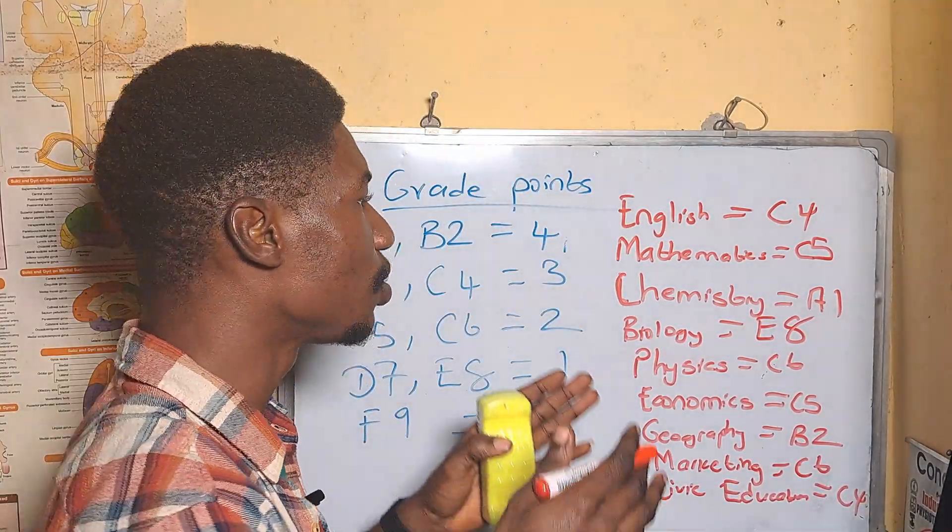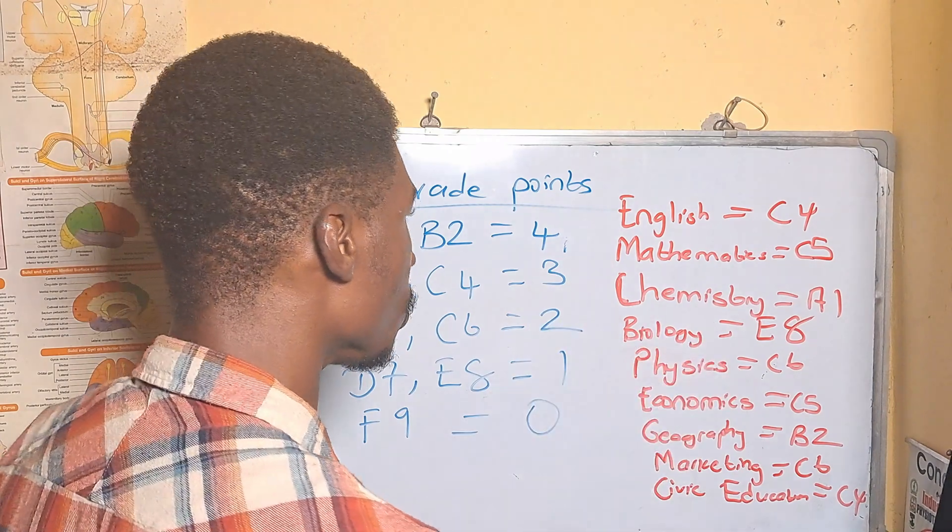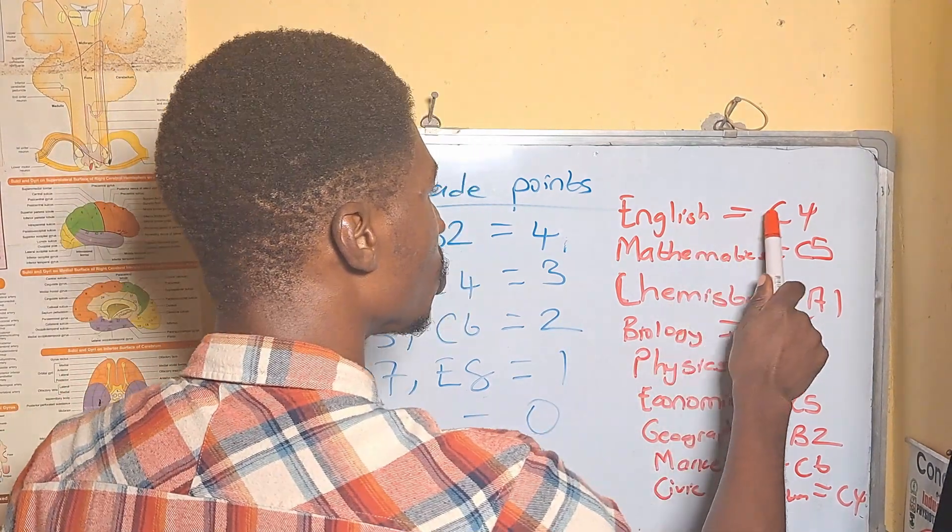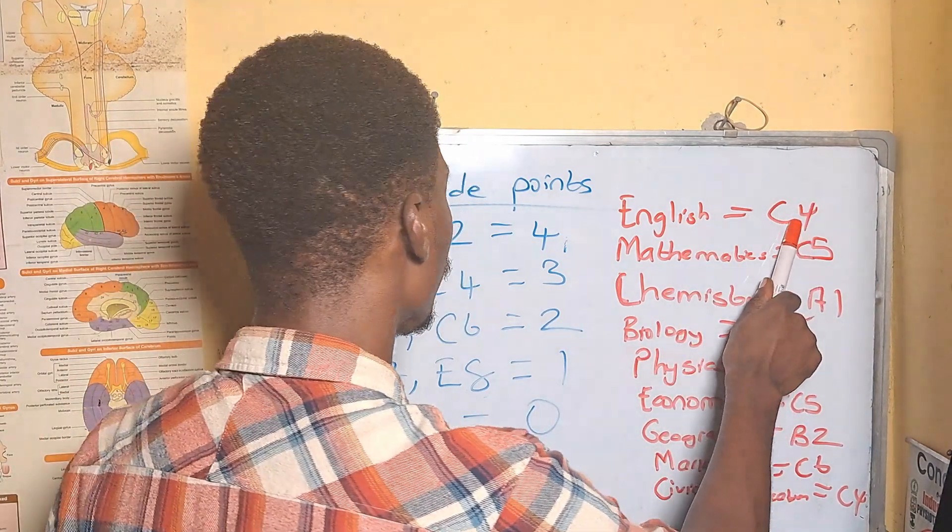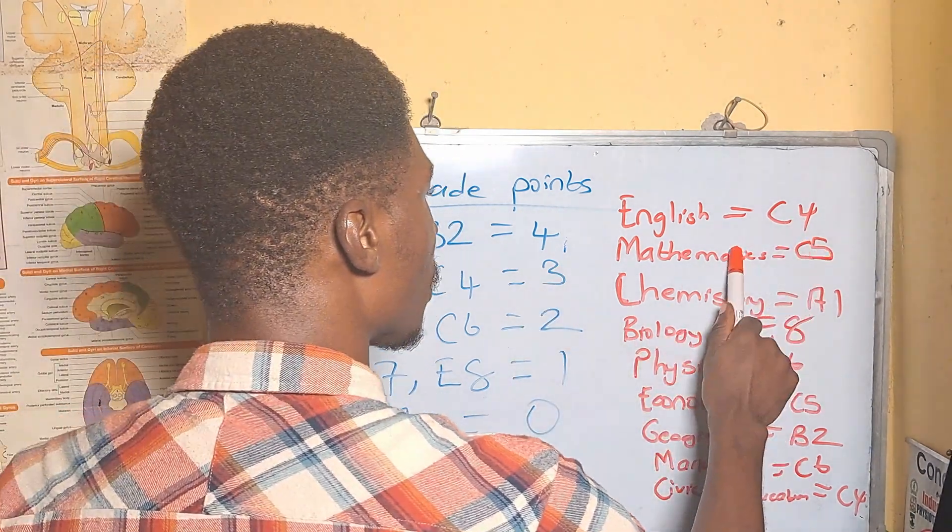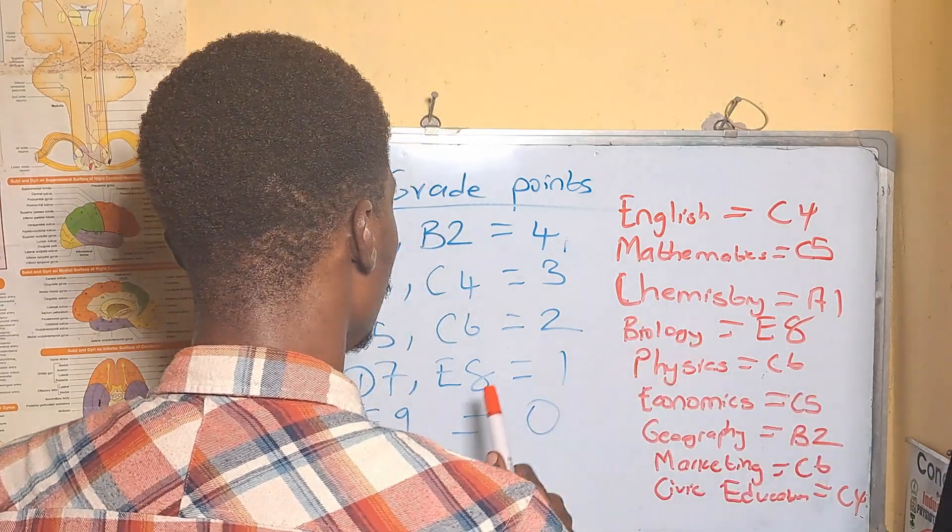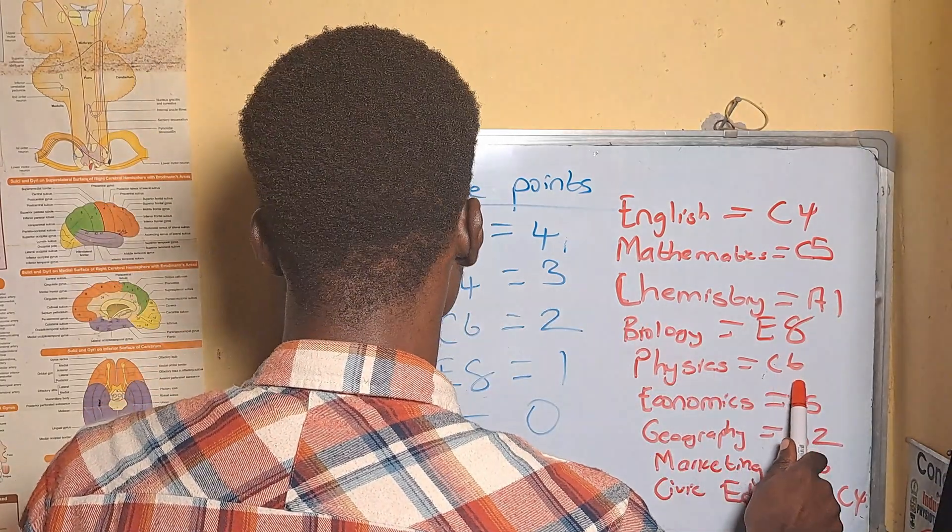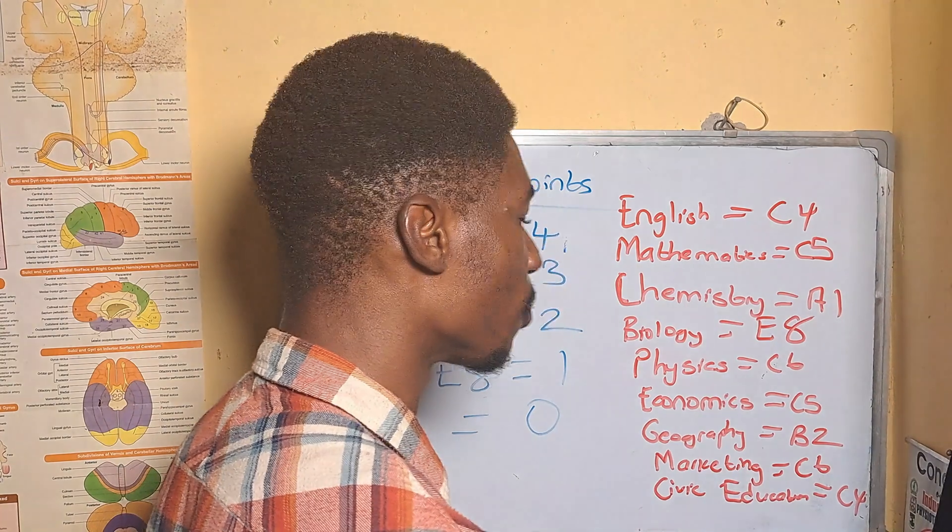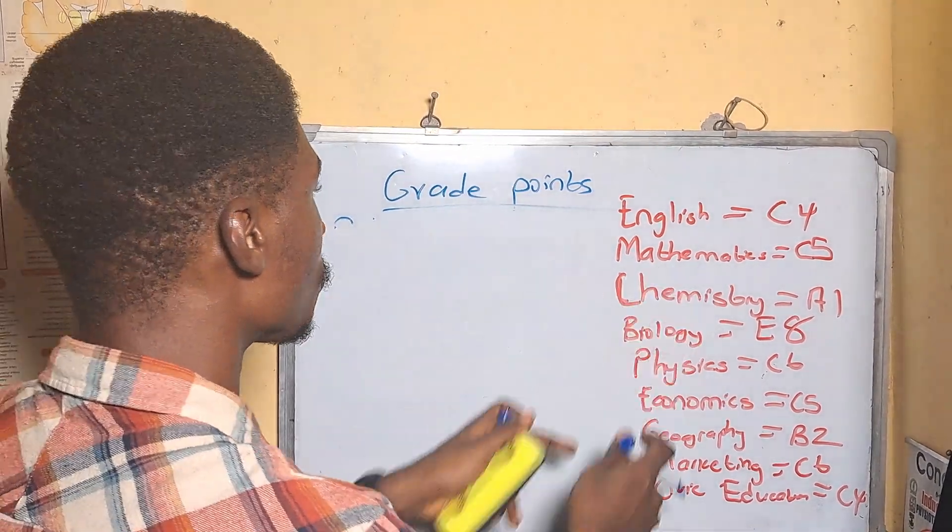We're going to calculate your GPA using these results. For English language, the grade C4 is going to be three points. For mathematics C5, two points. Chemistry A1 would be four points, and so on. To calculate the GPA for these subjects...